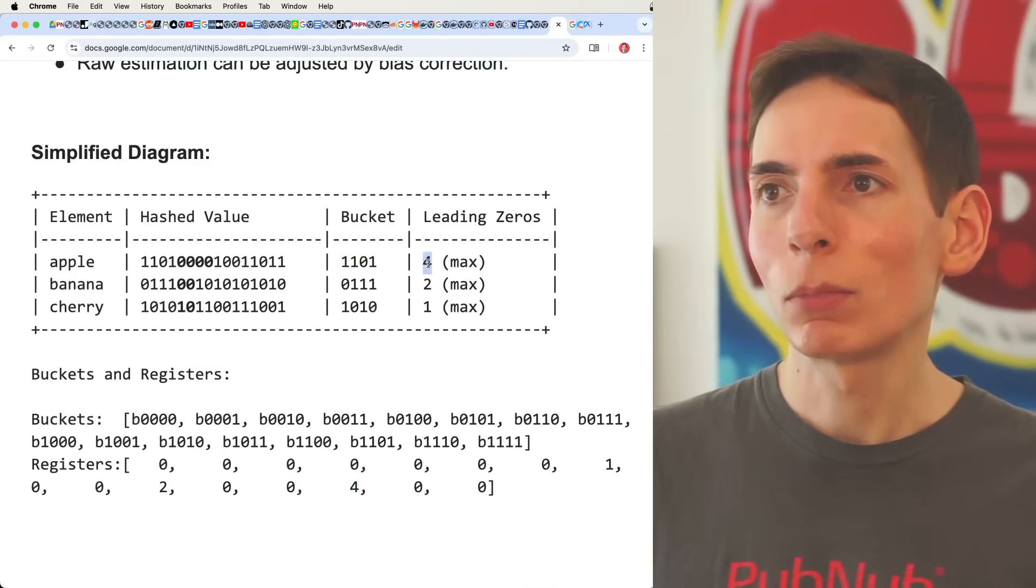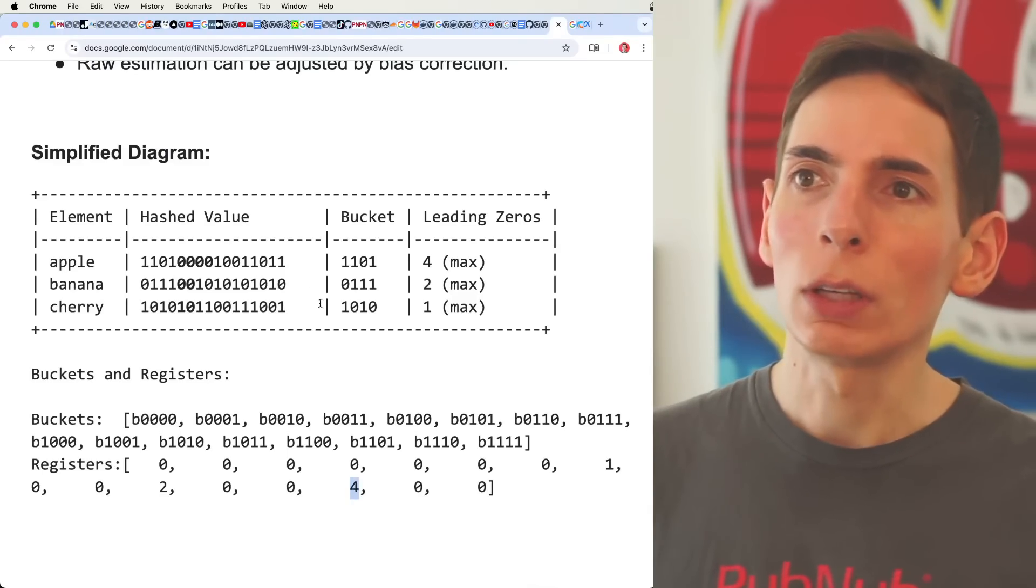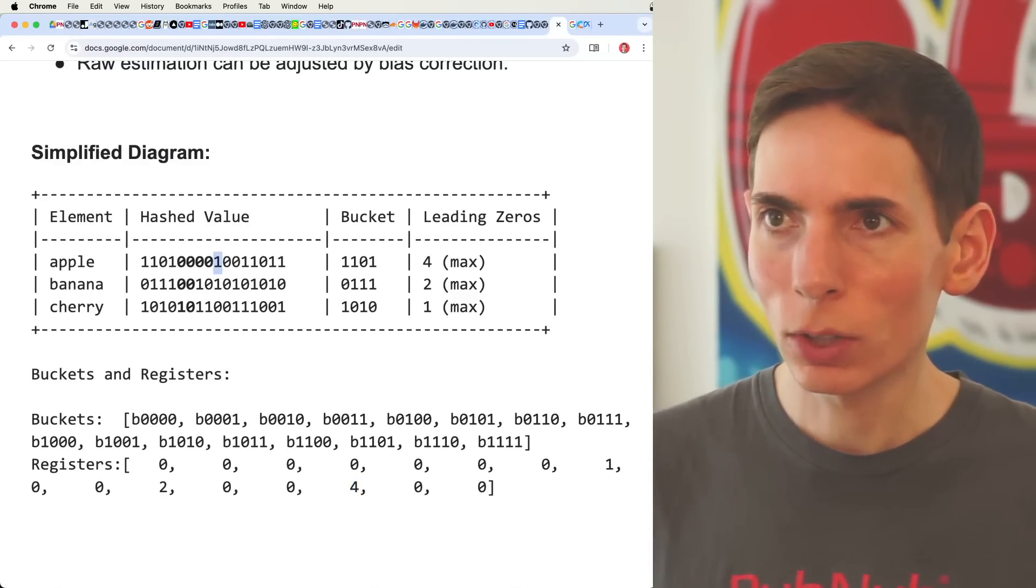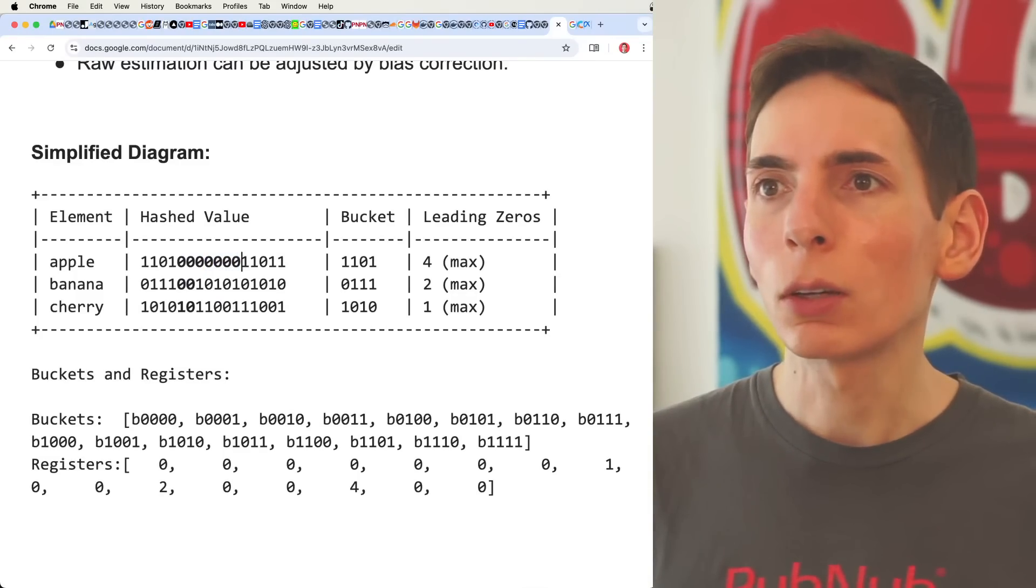And then the count here, the count of zeros, and that number goes here. And so if we saw more zeros in here, say we saw more zeros like that, now we've got even more zeros. So that would look like 1, 2, 3, 4, 5, 6, 7.